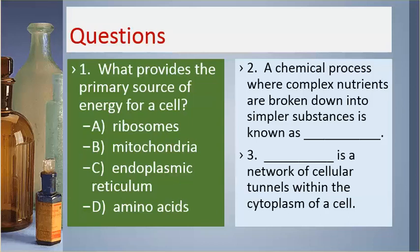Number two. A chemical process where complex nutrients are broken down into simpler substances is known as blank.